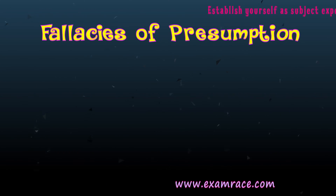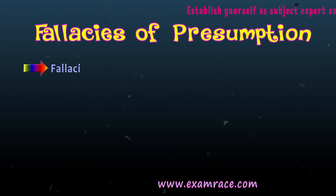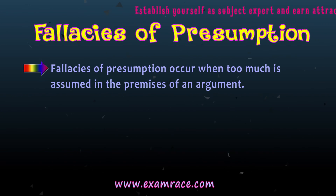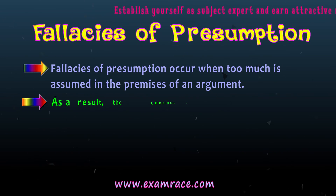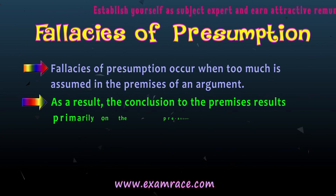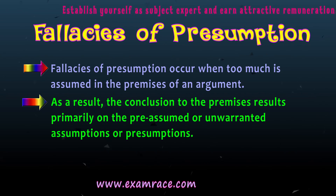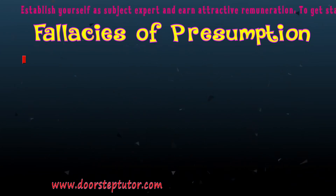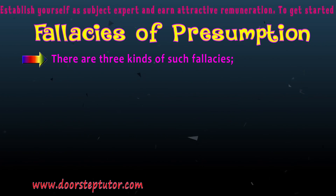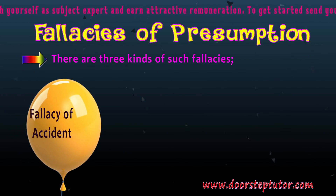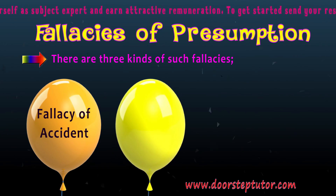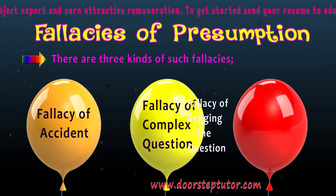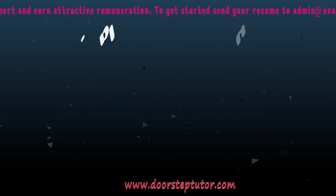Fallacies of Presumption occur when too much is assumed in the premises of an argument. As a result, the conclusion rests primarily on pre-assumed or unwarranted assumptions. There are three kinds of such fallacies: 1. Fallacy of Accident, 2. Fallacy of Complex Question, 3. Fallacy of Begging the Question.